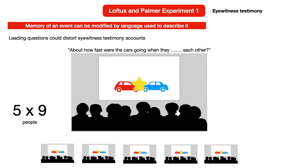One group was asked: 'About how fast were the cars going when they smashed into each other?' Another group was asked about when they contacted each other. Another group was asked about when they hit each other. Another group was asked about when they bumped into each other. And the last group was asked about when they collided with each other.